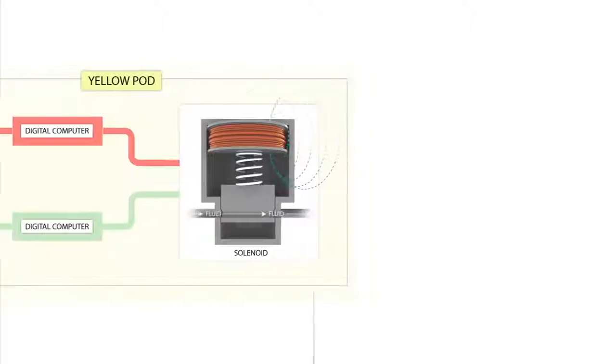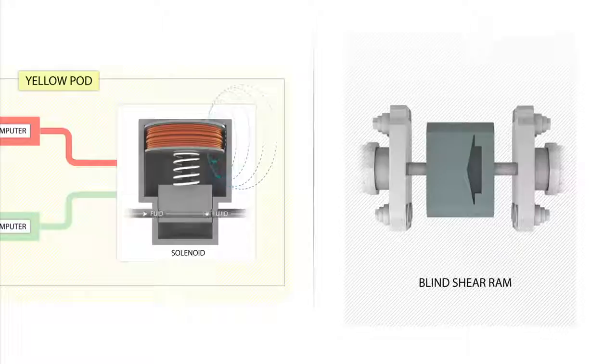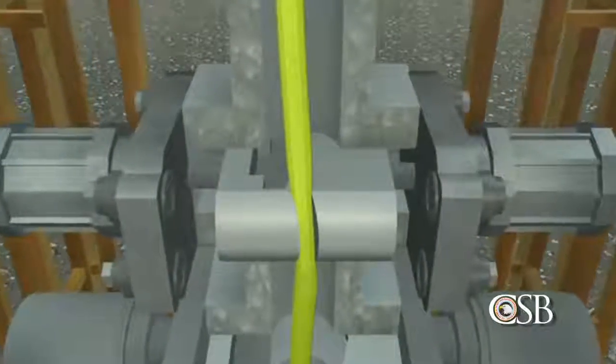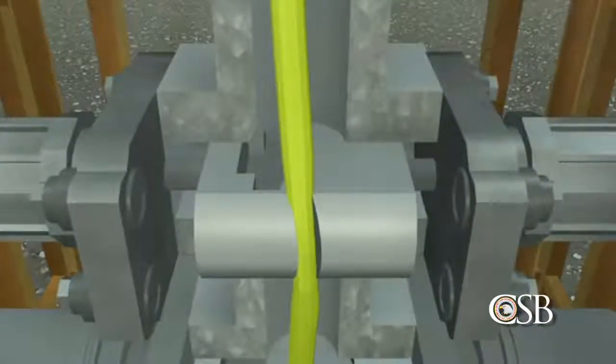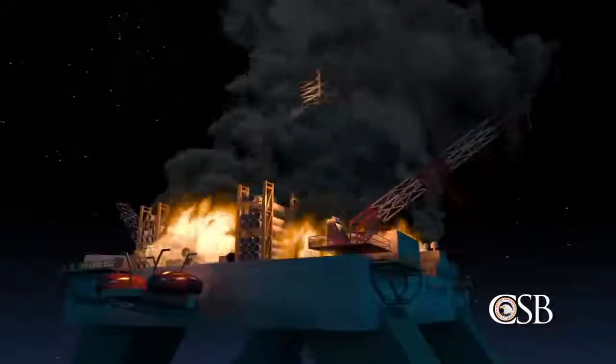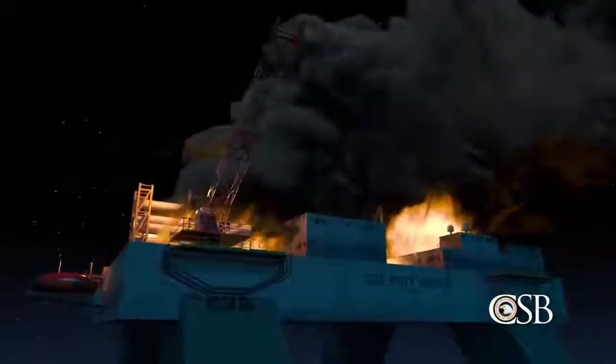This, in turn, initiated closure of the blind shear ram. This should have cut the drill pipe and sealed the well, greatly reducing the impact of the accident. But because the drill pipe was buckled and off-center inside the blowout preventer, it was trapped and only partially cut. With the failure of this last-ditch measure, there was nothing left to stop the massive oil spill and the destruction of the rig.